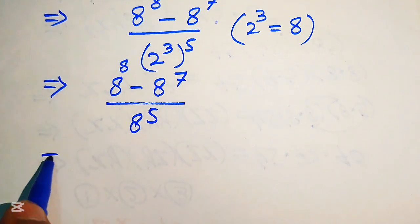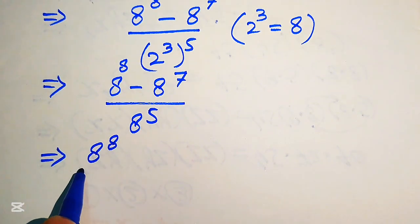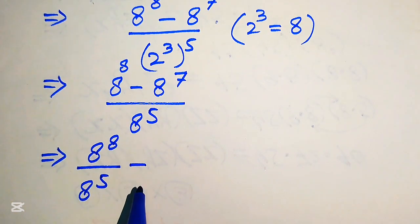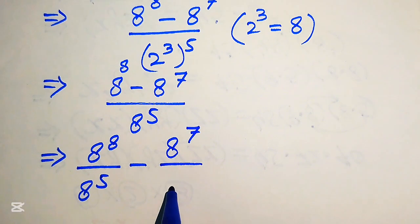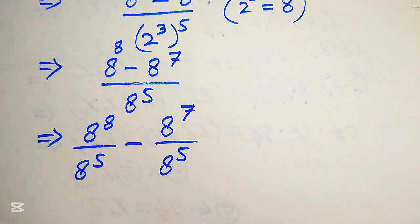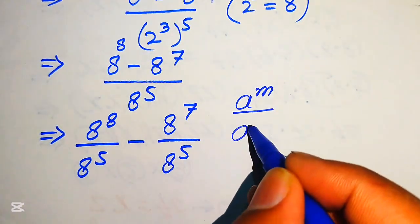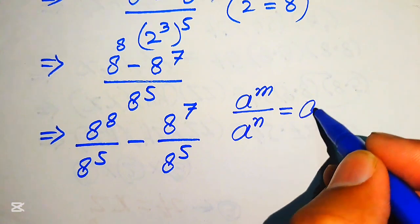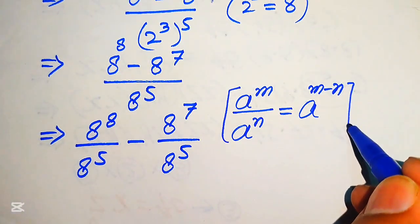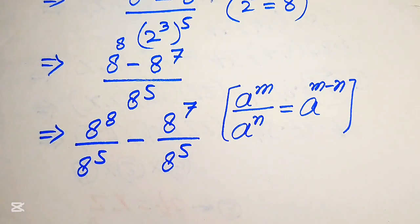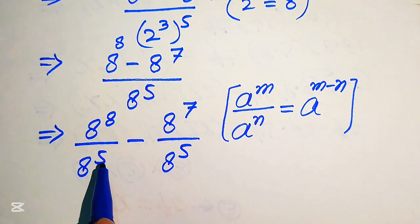In the next step, we need to break this fraction. We write these terms as 8 to the power of 8 divided by 8 to the power of 5, minus 8 to the power of 7 divided by 8 to the power of 5. Now we apply the exponent law: a to the power of m divided by a to the power of n equals a to the power of m minus n.